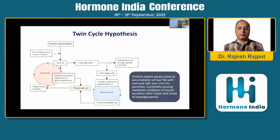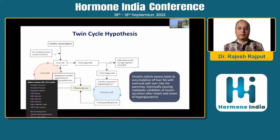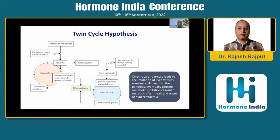What is the twin cycle hypothesis? Roy Taylor et al. proposed that when a person is in positive calorie intake for a long period of time — which is currently the environment in which we are living — this excess calorie intake leads to excess accumulation of fat in the liver. Once the liver is loaded with lots of fat, it spills over into the blood in the form of increased VLDL triglyceride. This excess fat overwhelms the capacity of adipose tissue and goes to tissues where it should not be, like the pancreatic islet cells, which are normally free of fat or have very minimal — less than 2 grams of fat.